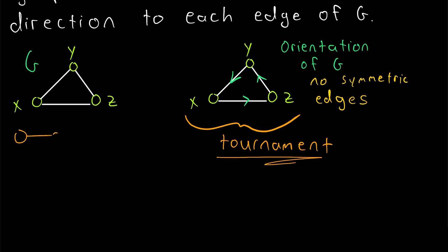Remember, given an undirected graph, an orientation of that graph is just a directed graph created by assigning a direction to each edge of the undirected graph.